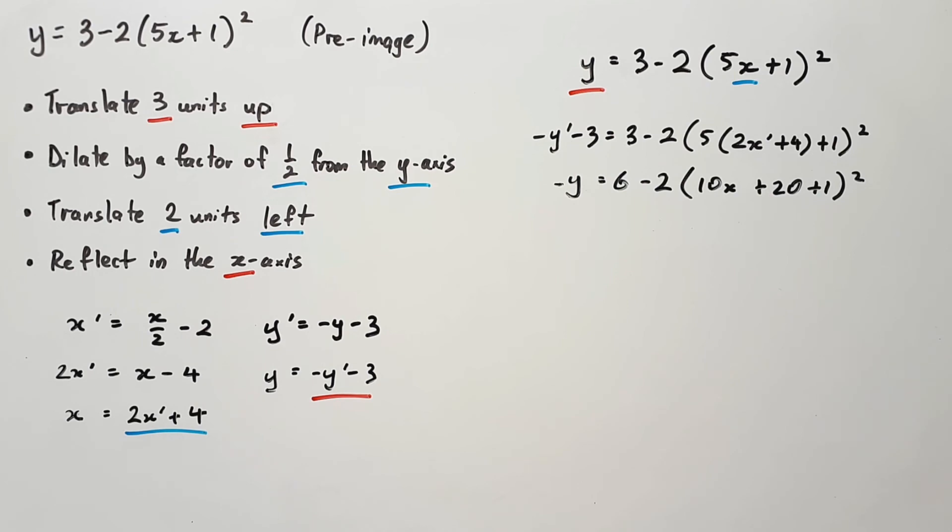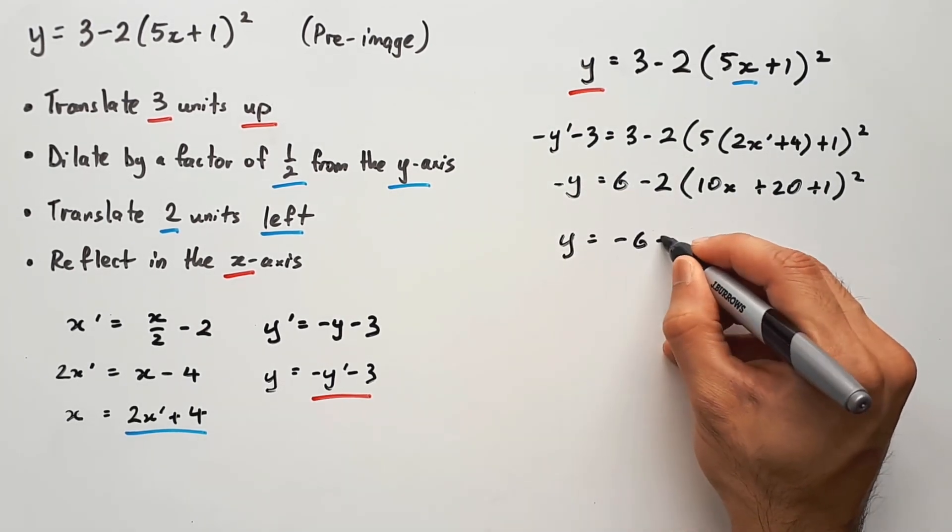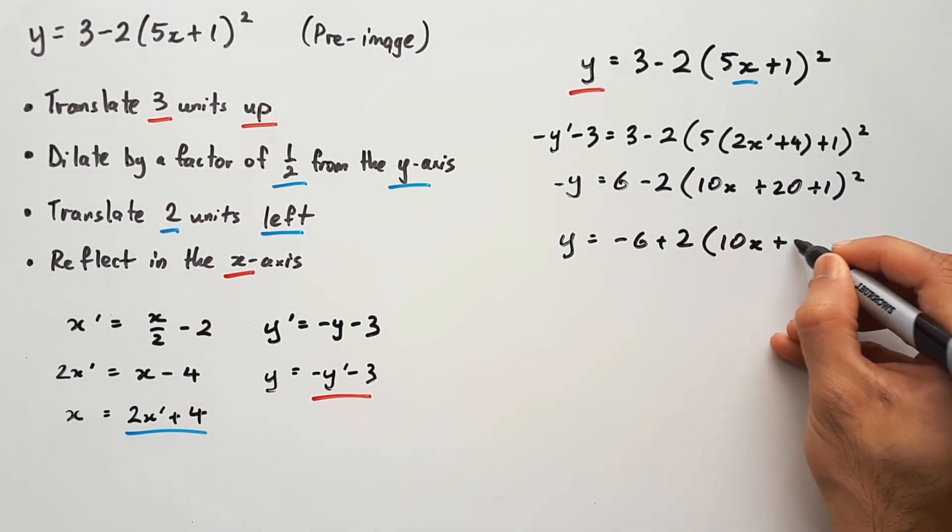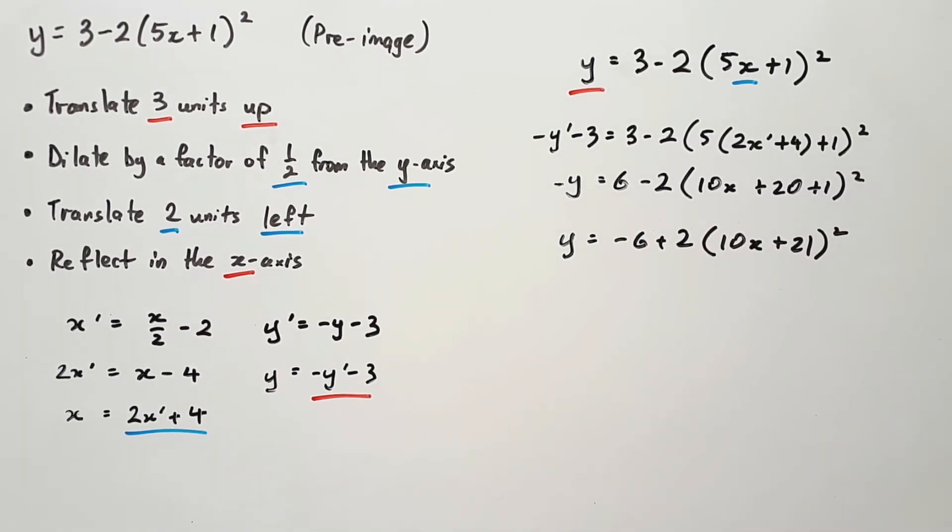You don't have to do it at the very end, as long as you do it on the same line. And so we have y equals -6 + 2(10x + 21)². And this is our image equation. This is the final answer.